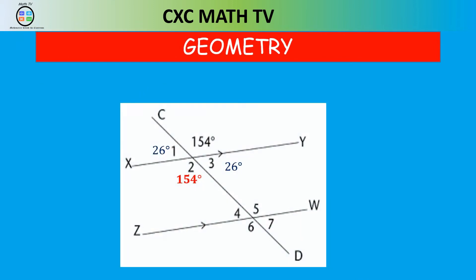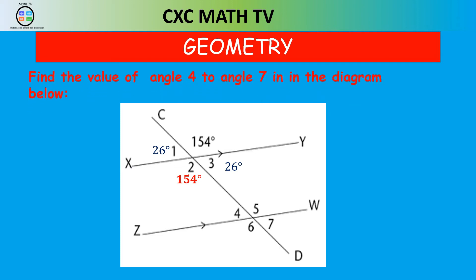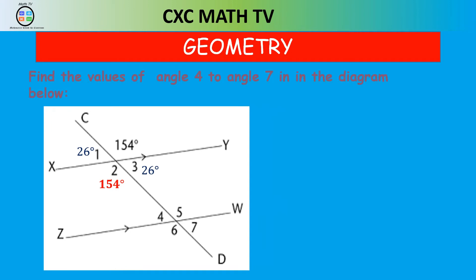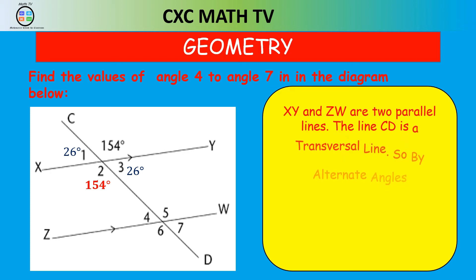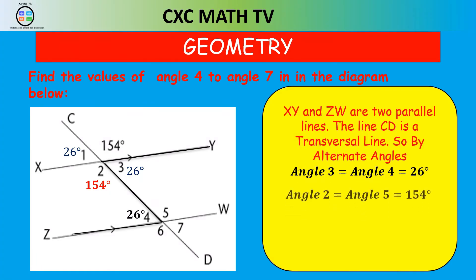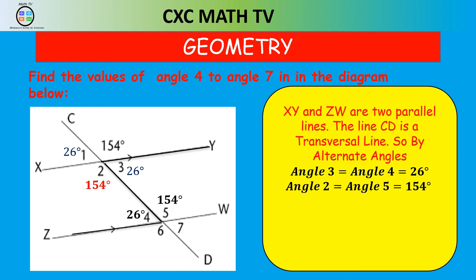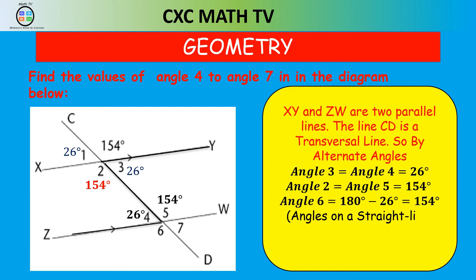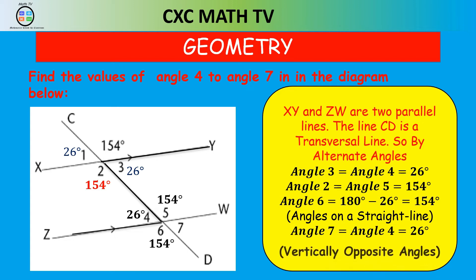We need to find angle 4 and angle 7. Drawing our Z, angle 3 equals angle 4, which is 26 degrees. Drawing our Z again, angle 2 equals angle 5, which is 154 degrees. Once we have angle 4 and angle 5, we can find angle 6: angles on a straight line sum to 180, so 180 minus 26 is 154. Angle 7 can be found the same way — 154 plus angle 7 is 180 — or by vertically opposite angles, angle 7 equals angle 4, which is 26 degrees.